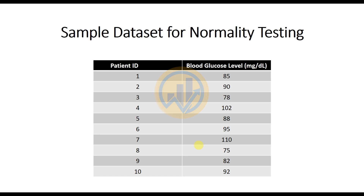This is a sample data set for the normality test in OriginPro software. We take the same age group for 10 persons. This is a person ID and we take blood glucose level in milligrams per deciliter for each patient. Person 1 has the lowest and person 7 has the highest blood glucose level. We will use this data to calculate the normality test.